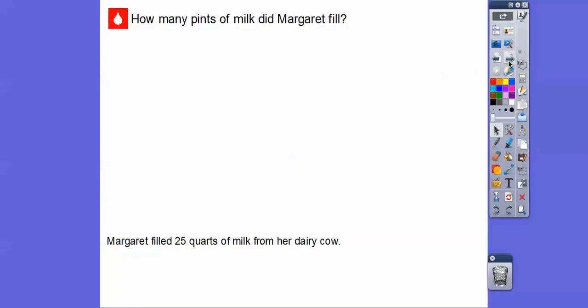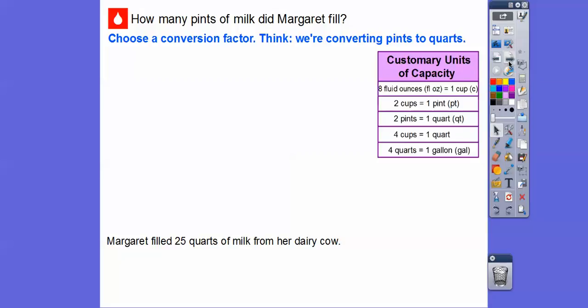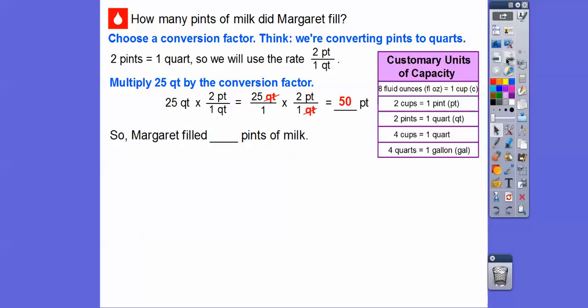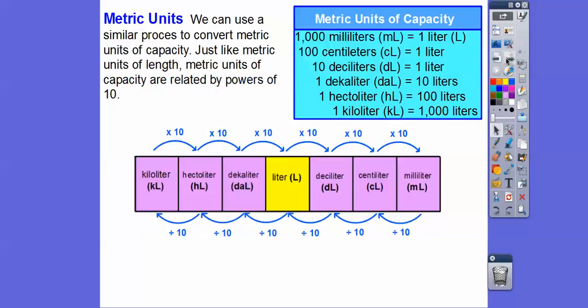How many pints of milk did Margaret fill? We need to find the conversion factor for quarts and pints. Quarts and pints is right here: 2 pints equals 1 quart. Notice we're going to do 2 pints over 1 quart—we don't want the quarts involved, just the pints left over. We'll multiply 25 quarts times 2 pints for 1 quart. Change 25 quarts to 25 over 1, then the quarts cancel. We're left with 25 times 2, or 50 pints. Margaret filled 50 pints of milk.